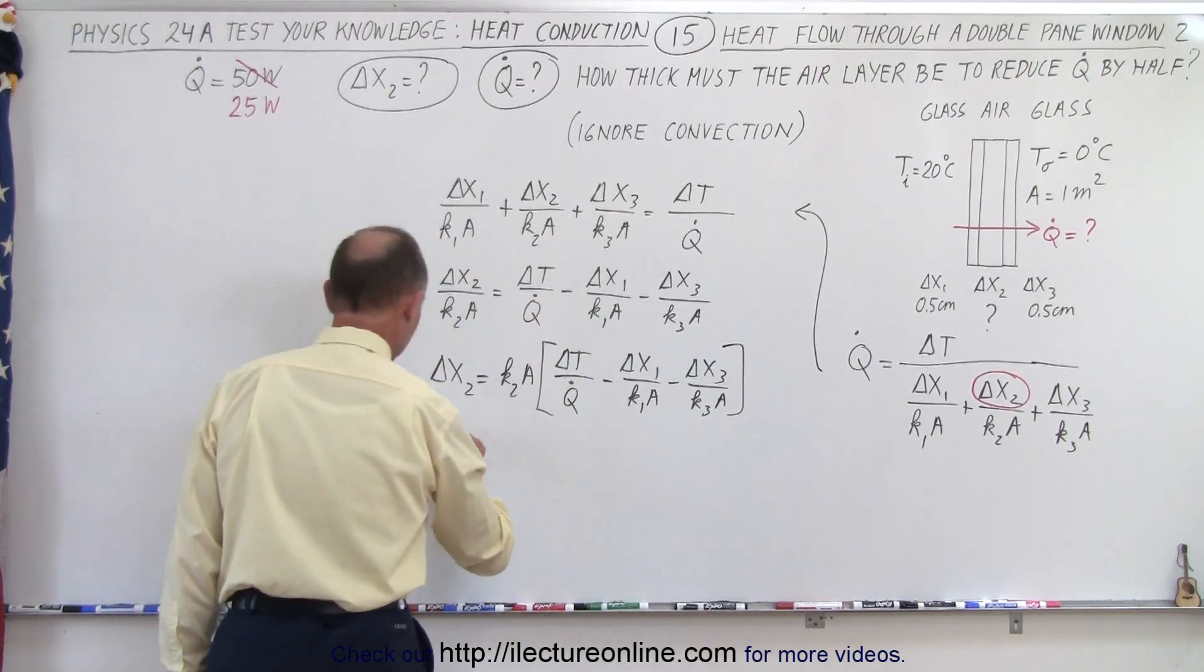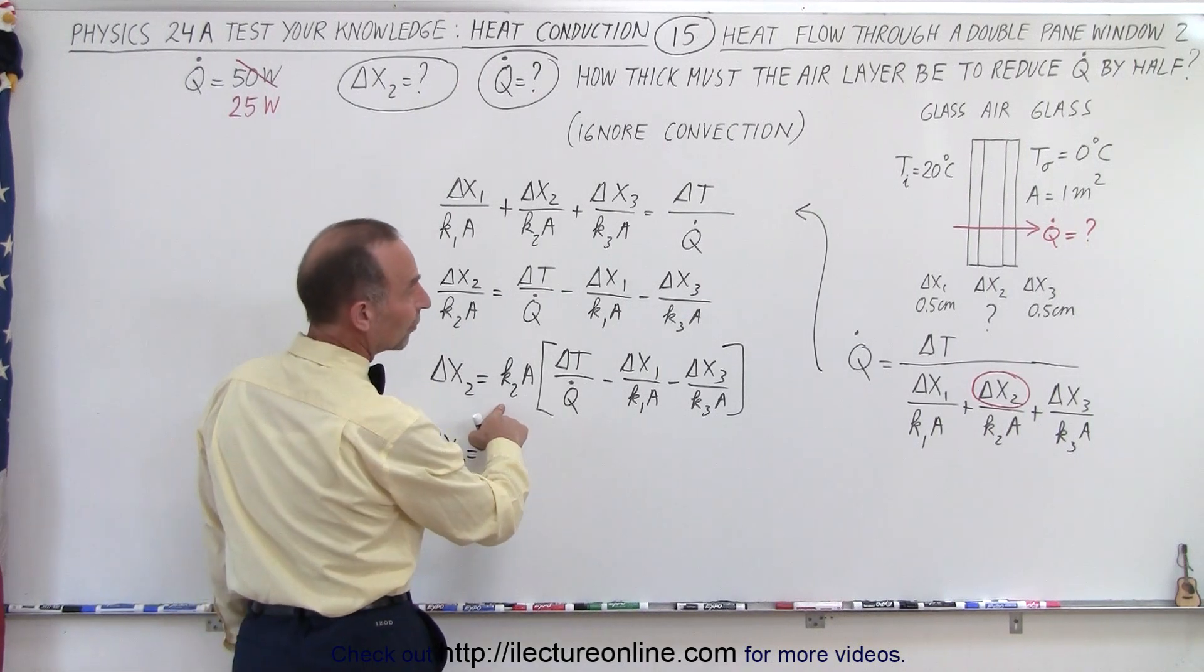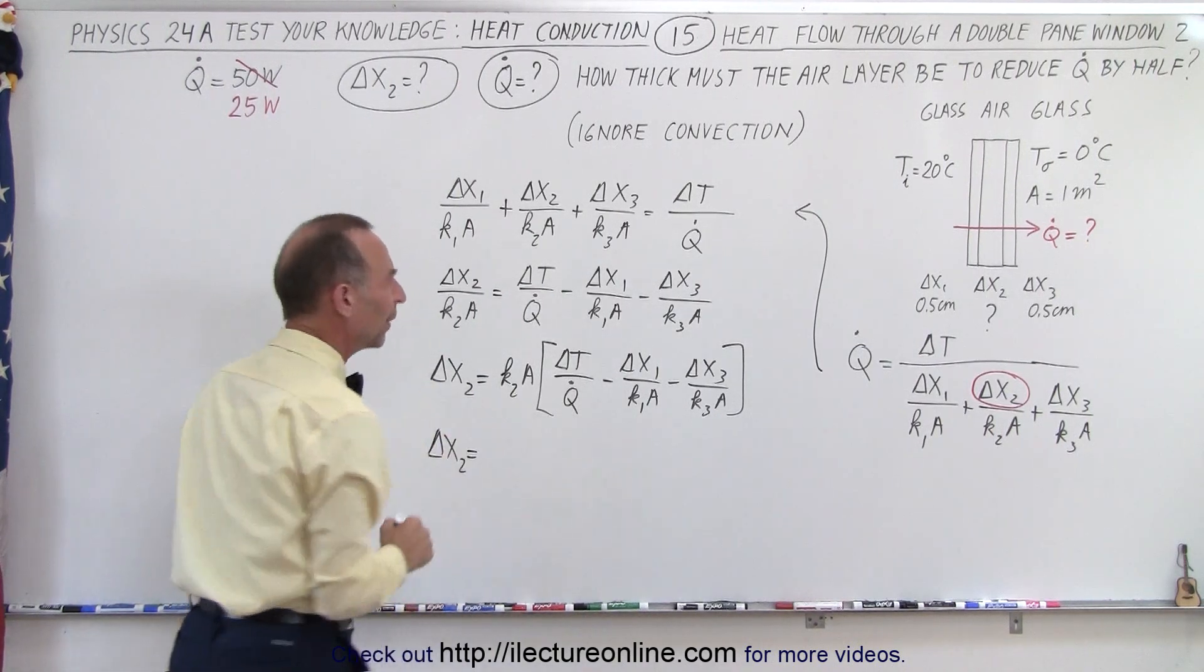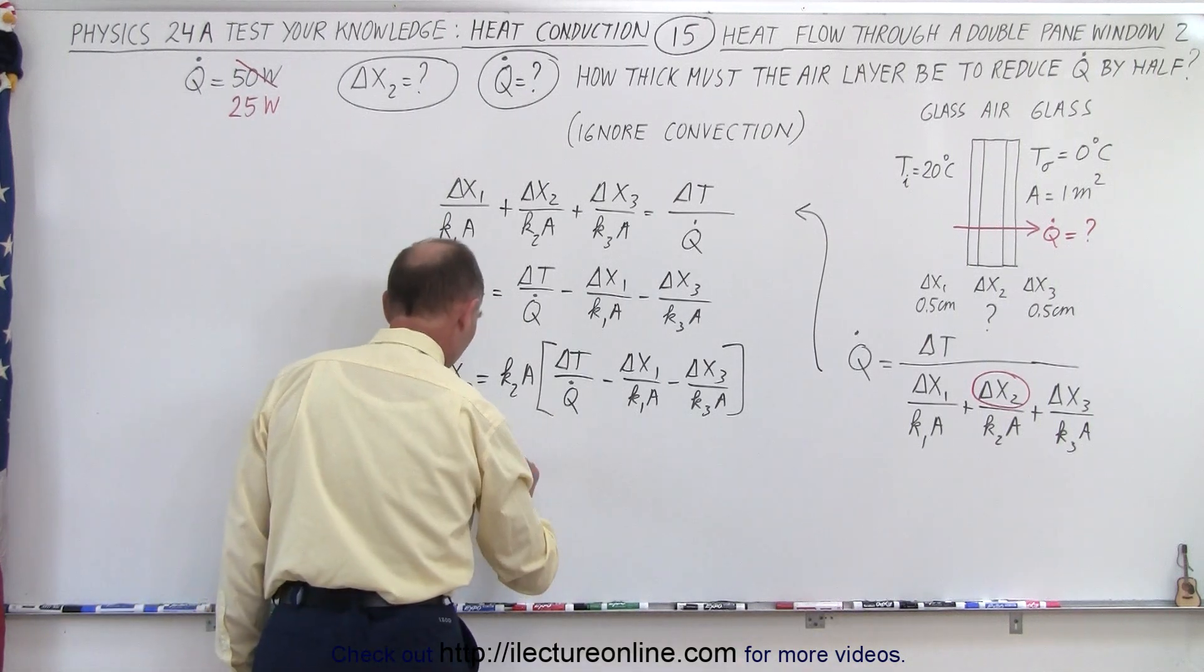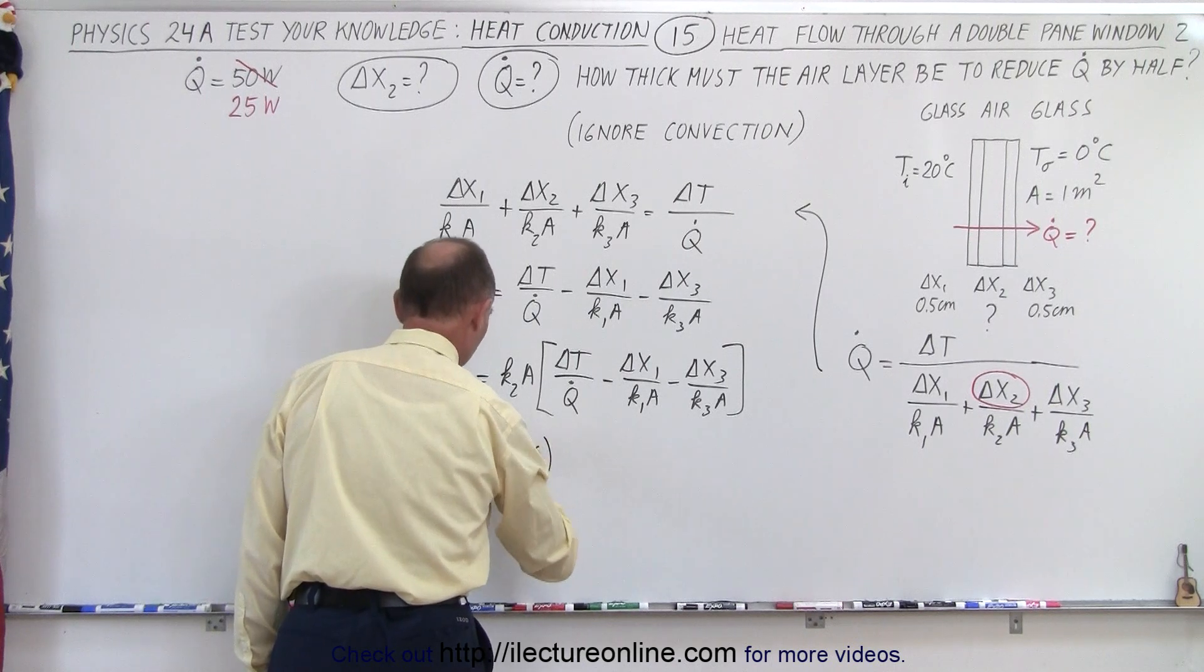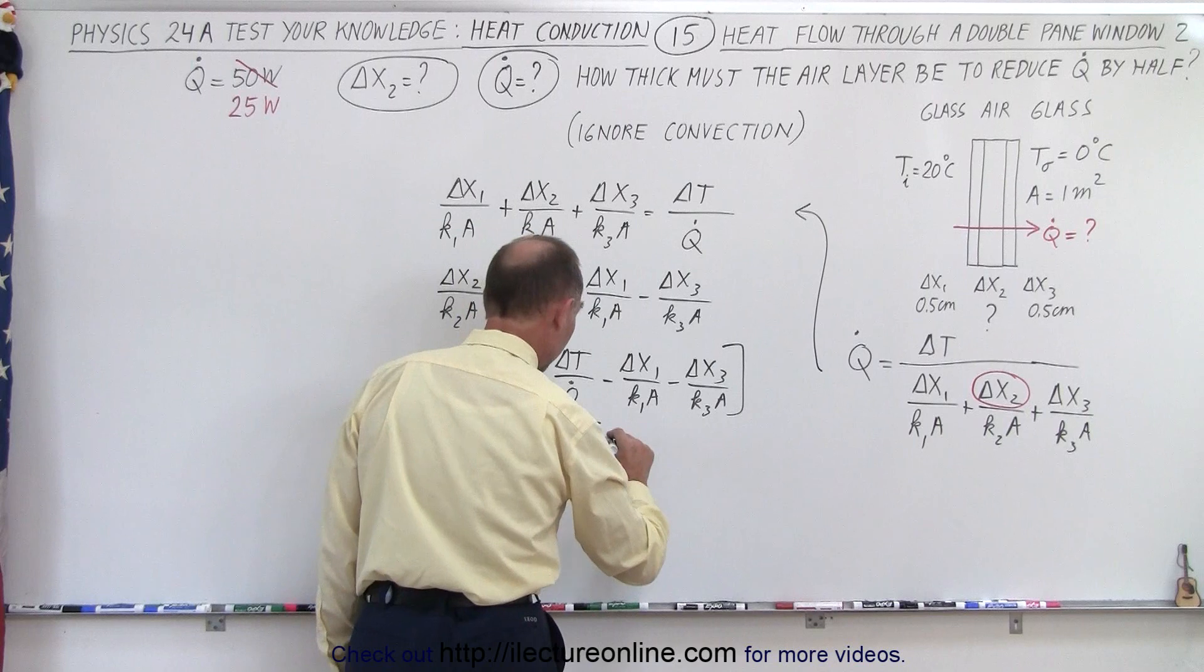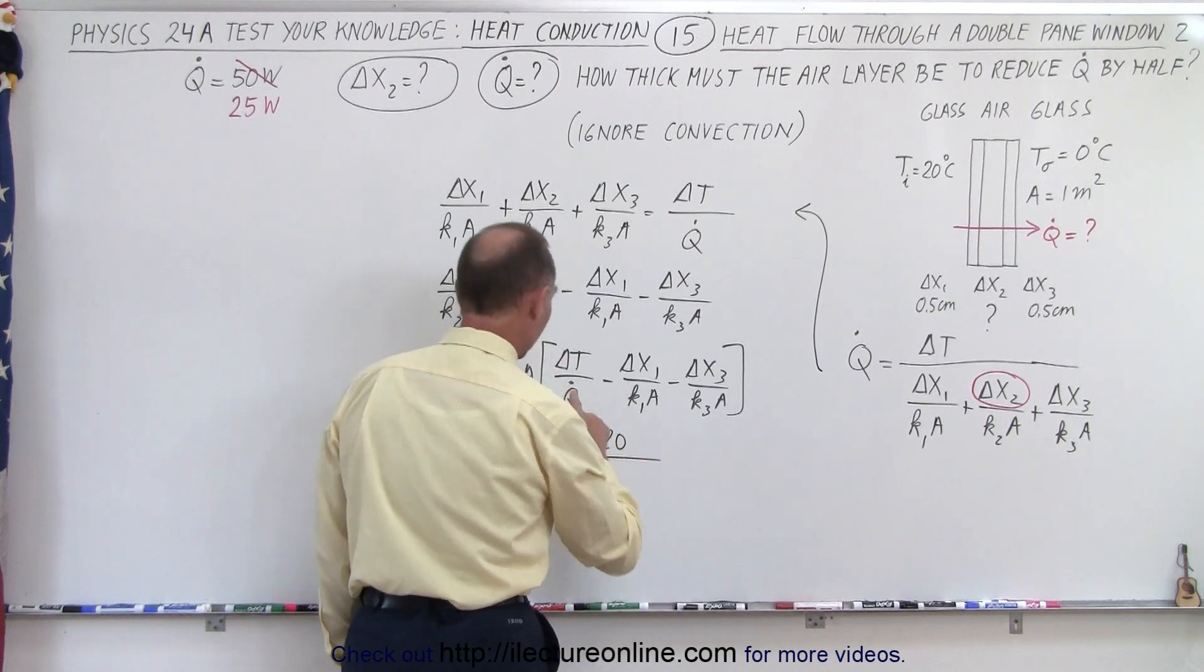Now we need to plug in the values to get delta x2. k2, that's the heat conductivity. Oh, I erased it, but I remember for glass that was going to be 0.026 cross sectional area is 1 times the delta t was 20 centigrade degrees divided by q dot.